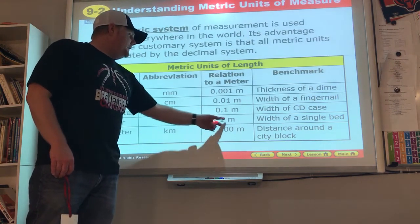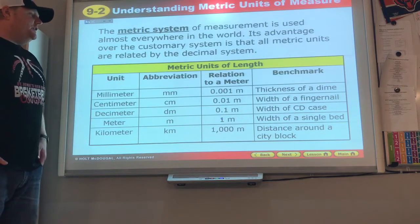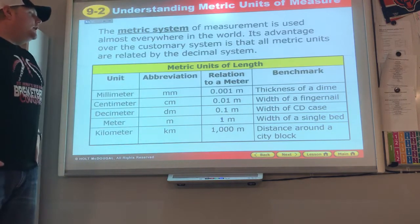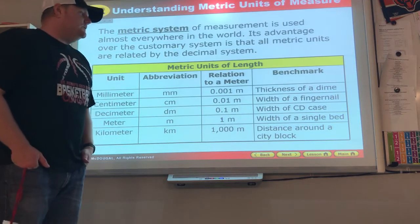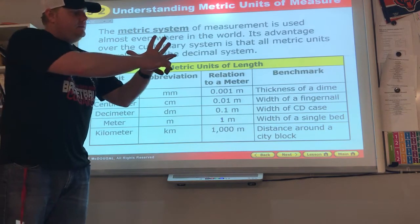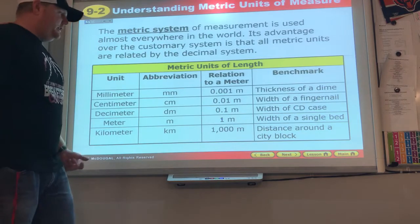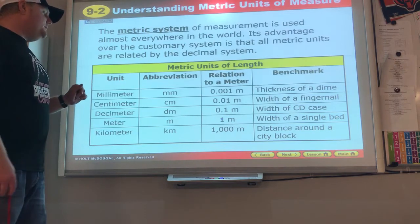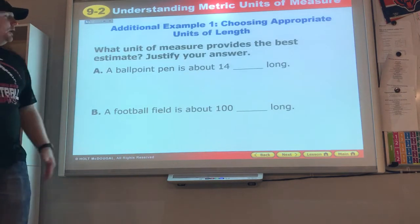The thickness of a dime is a millimeter. Width of a finger, not the depth but the width from side to side, is a centimeter. One decimeter: width of the CD case. So how wide the CD case is - if that's confusing, it's going to be about that wide from my pinky to my thumb. A meter is 39 inches or three feet and three inches. So that'll give you an idea - the width of a single bed or the width of a door frame. And the distance around a city block, or point-eight-something of a mile, is a kilometer.